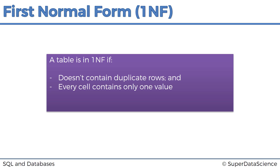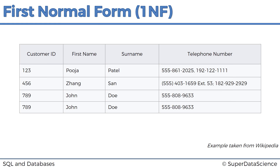Let's have a look at an example. Here we've got an example of a table. Can you tell me right away if it's in first normal form or not? Well, the answer is pretty obvious — this table is not in 1NF, short for first normal form.